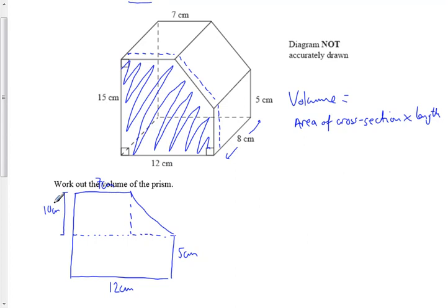We need one more length. It's this length here, so we've got 7 from here to here. We're in 12 all the way on the bottom, so it means this little gap here is 5cm.